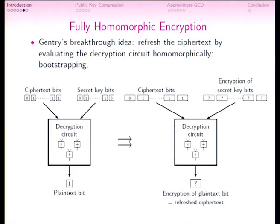Since the circuit operates on ciphertexts, it takes as input an encryption of the secret key bits — for every secret key bit we provide an encryption of it. For the ciphertext bits, we keep the same value, because in the DGHV scheme, 0 is an encryption of 0 and 1 is an encryption of 1. These ciphertexts get combined inside the new decryption circuit, and since the same operations are done, we get exactly the same plaintext bit — now represented as a new ciphertext.